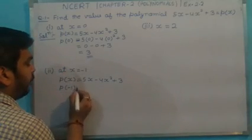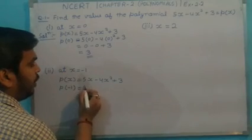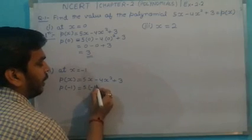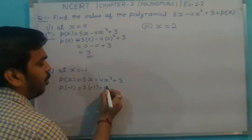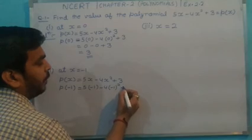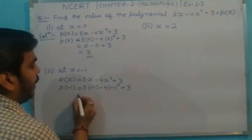Putting value -1: 5(-1) - 4(-1)² + 3. The second rule I told you: always put the value of x in brackets. So it's 5(-1) - 4(-1)² + 3.